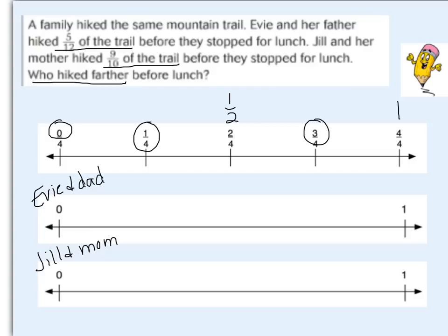Let's use these two number lines to make this comparison. I know that halfway between zero and one would be a half, and I'm going to mark that on both number lines. For Evie and her father, they hiked five-twelfths, so let's mark in twelfths what a half would be — half of twelve is six, so one-half is equivalent to six-twelfths. For Jill and her mom, who hiked nine-tenths, I need to work in tenths: half of ten is five, so on this number line the halfway mark will be at five-tenths.